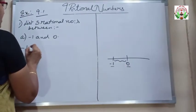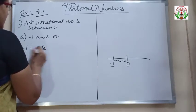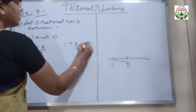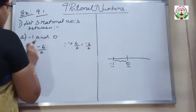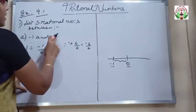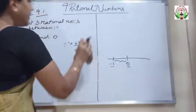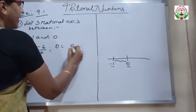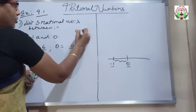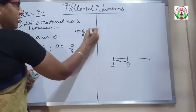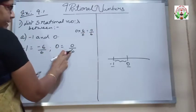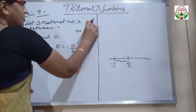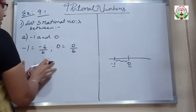To find the 5 Rational Numbers between minus 1 and 0, I am writing minus 1 as minus 6 by 6. That means I am multiplying and dividing minus 1 with 6, so it becomes minus 6 by 6. Similarly, for 0, multiplying and dividing with 6 gives 0 by 6, since 6 into 0 is 0.